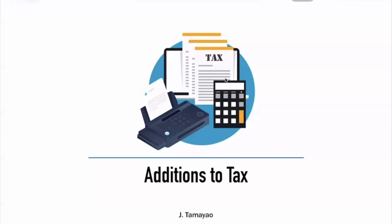For this session, we will talk about your additions to tax. In the previous sessions, we already talked about the tax administration of the VAT — that is to assess and collect. We also talked about your compliances as to when to file a particular tax and what particular form to use. So now, after knowing that you have a basic tax, generally you have an addition to tax. Here, we will talk about what those additions to tax are.